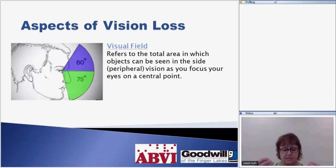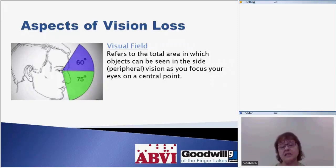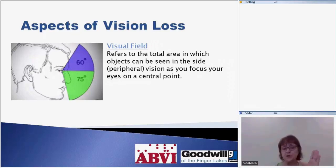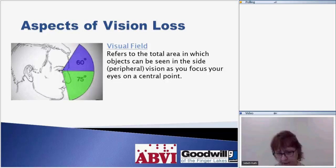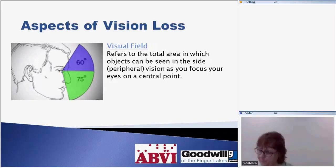Loss of depth perception presents as someone who perhaps over- or under-reaches, bumps on their sides, or over- or under-steps. A central field loss, like macular degeneration, means wherever the person's gaze is fixed, that's where the blind spot is. The person may be looking off to the side — you may wonder why they aren't looking at you, but they're trying to catch you in their peripheral vision. And peripheral vision is never 20/20; at best it is 20/60, so it's always a little blurry.